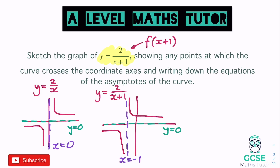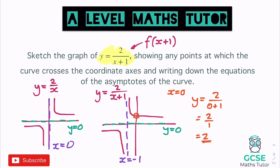Now we need to find where the graph crosses the axes. It crosses the y-axis this time, and when a graph crosses the y-axis, x = 0. Substituting into y = 2/(x + 1): y = 2/(0 + 1) = 2/1 = 2. So the graph crosses the y-axis at (0, 2), and we can label that as a y-intercept of 2 on our sketch.